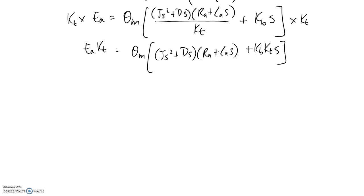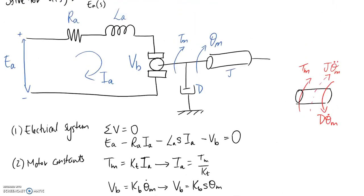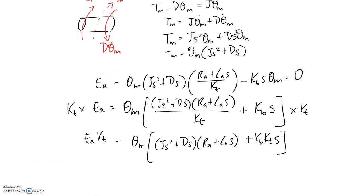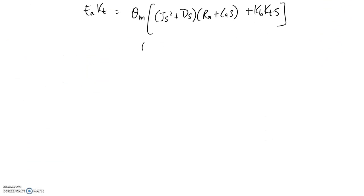And remember the transfer function that I'm going for, if we scroll all the way back up, was omega m divided by Ea. And we're going to be able to evaluate omega m back to theta m quite easily. So at this point in my process, what I'm going to try and solve for is theta m divided by Ea. So coming back down, theta m divided by Ea, I can get quite easily. I just bring this down to the other side of the equation. And I'm going to be left with Kt on this side divided by all this.